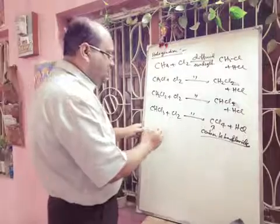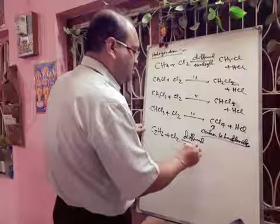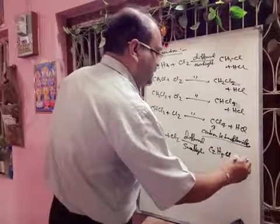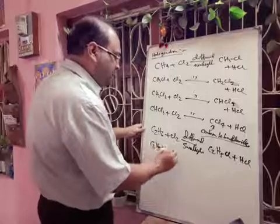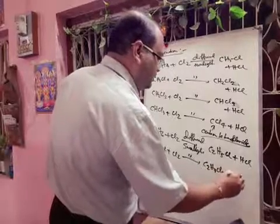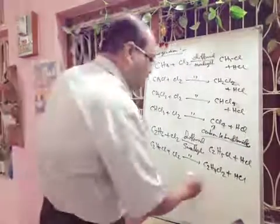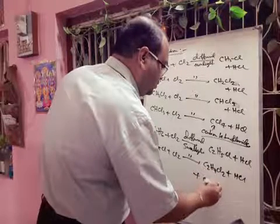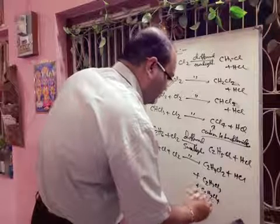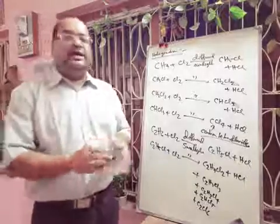Similarly for ethane: adding Cl2 in diffuse sunlight first gives C2H5Cl (ethyl chloride) plus HCl. Ethyl chloride reacts with excess chlorine to give C2H4Cl2 (dichloroethane — which may be 1,1-dichloroethane or 1,2-dichloroethane). This continues to form C2H3Cl3 (trichloroethane), then tetrachloroethane, then pentachloroethane, and finally C2Cl6 (hexachloroethane). So in this way you get a mixture of compounds.